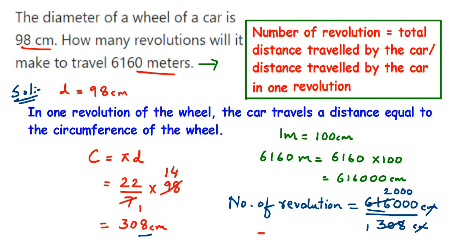So the number of revolutions is 2000. When the wheel rotates 2000 times, it will cover a distance of 6160 meters. I hope this question is clear. If you have any other questions or doubts, you can drop a comment. Thank you so much for watching.